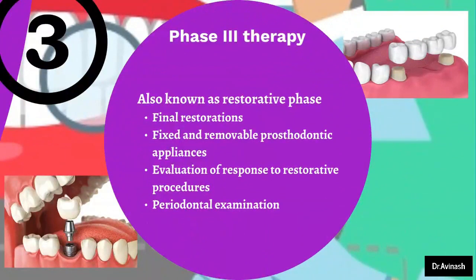In phase 3 therapy, which is also known as the restorative phase, we perform final restorations. If a temporary restoration was done in phase 1 therapy, now in phase 3 we will be doing the permanent or final restoration. Fixed and removable prosthodontic appliances can also be done in this phase. Evaluation of response to restorative procedures and periodontal re-examination are also performed in this phase to evaluate the outcome of procedures done in previous phases.